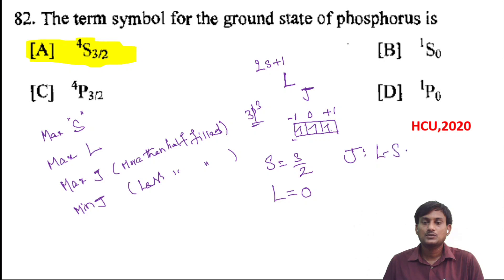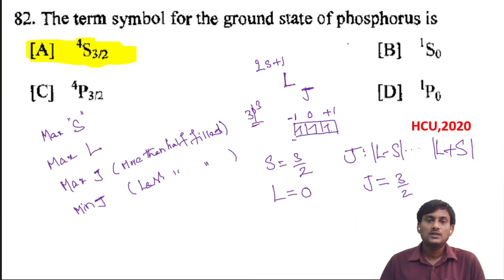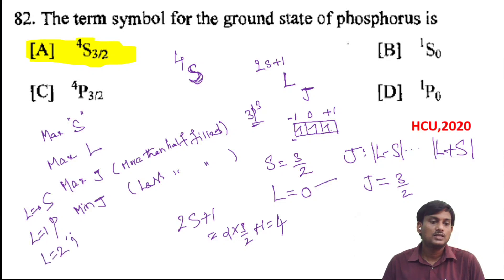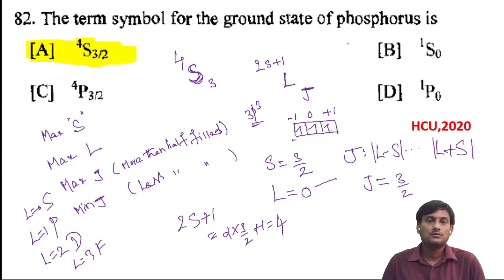The J value ranges from L minus S to L plus S. Since L is 0, J equals only S, which is 3/2. The spin multiplicity 2S+1 equals 2 into 3/2 plus 1 equals 4. When L equals 0 the symbol is S; L=1 is P; L=2 is D; L=3 is F. So the term symbol for ground state phosphorus is 4S(3/2).